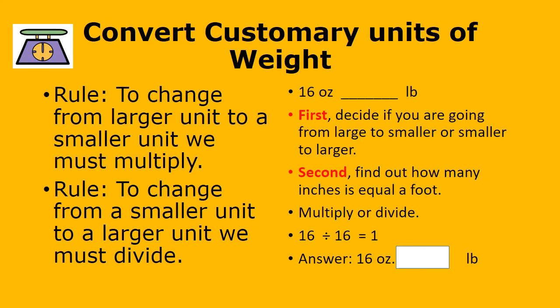Pause the video and see if you can work this one out: 16 ounces equals blank pounds. We have ounces and pounds — pounds is larger, so we're going from smaller to larger and we divide. 16 ounces is one pound, so 16 divided by 16 equals 1. Great job.